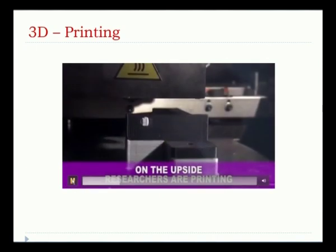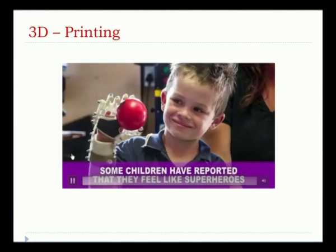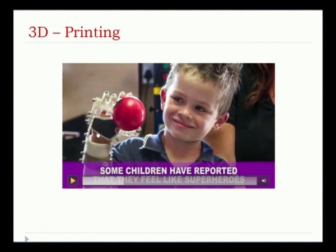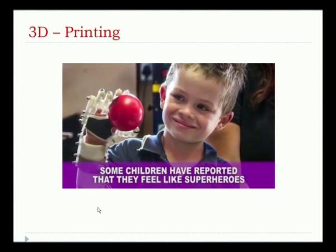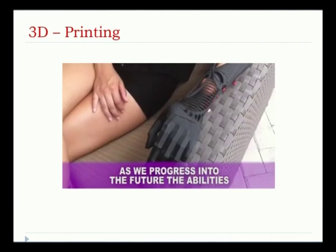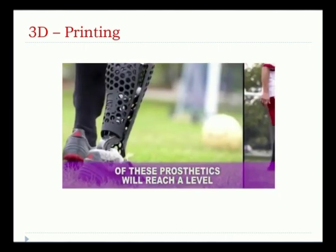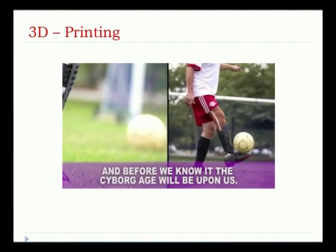Prosthetics: researchers are printing better and better prosthetics for those in need. We already have issues — we currently use wood support or metal support. These 3D printed materials act in between both: they won't give the hardness or heaviness of metal or the full flexibility of wood. We need to reduce weight while maintaining the ability to do actions very flexibly. They have made materials which are really going to be helpful in working. Those using prosthetics can play football and do activities. Before we know it, the cyborg age will be upon us.